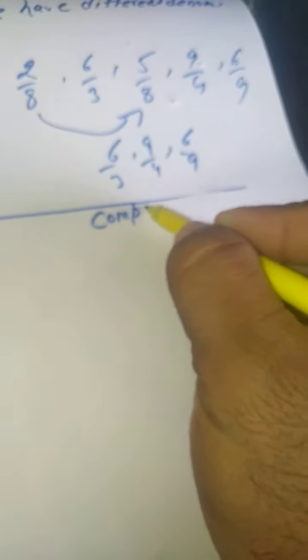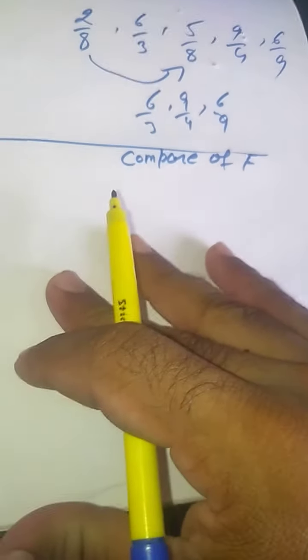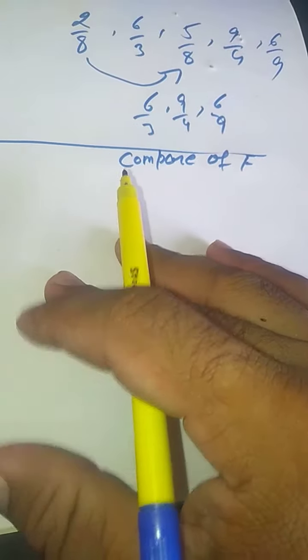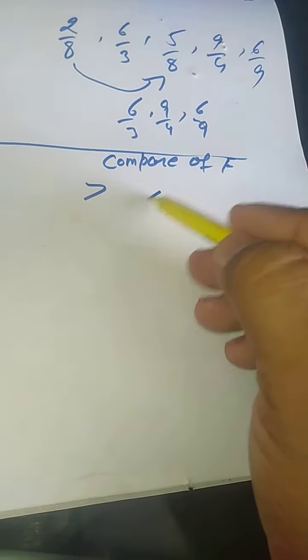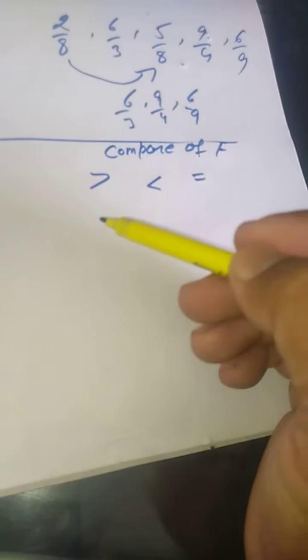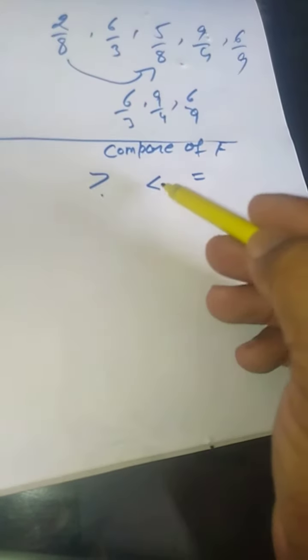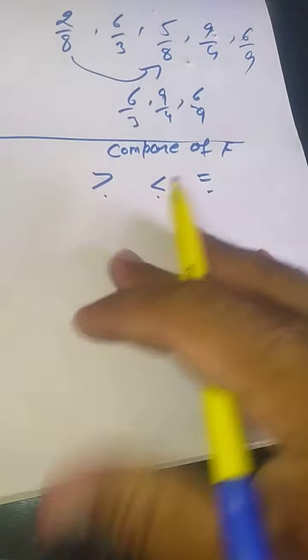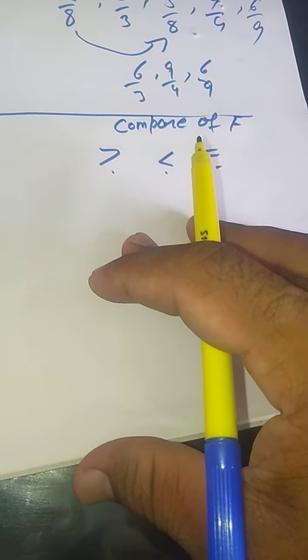Next is Compare of Fractions. Compare means आपको symbol लगाने हैं — greater than (>), smaller than (<), and equal (=). आपको बताना है कौन सी fraction बड़ी है, कौन सी छोटी है, या दोनों equal हैं।